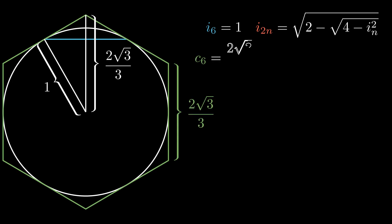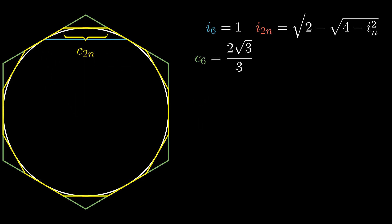Let's generalize this hexagon to be a circumscribed n-gon and draw a circumscribed 2n-gon, where its side length is c_2n by definition. This line is a side of the inscribed n-gon, so its length is i_n.